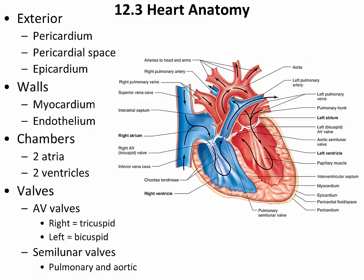There are four chambers in the heart. Two are located toward the top — the left atrium and the right atrium. Two thicker-walled chambers are located in the lower portion — the right ventricle and the left ventricle. Remember from anatomy that as you look at the heart in anatomical position, the right ventricle appears on the left and the left ventricle appears on the right.